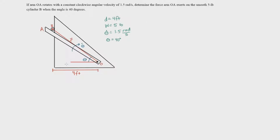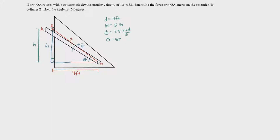One thing we can point out about this picture is that the cylinder started at some initial point and moved directly upward along the side of this triangle. The distance from O to the cylinder is constant at 4 feet — this length does not change with time. So the first thing I'm going to do is define a height H, right where the cylinder is now, and use this right triangle to create an equation that maps out the acceleration of this cylinder.